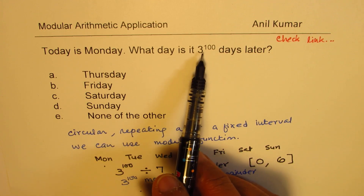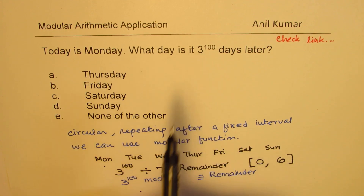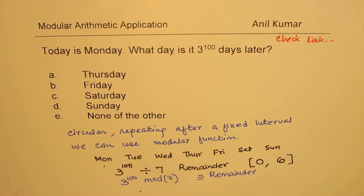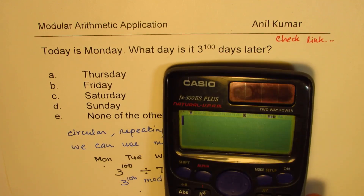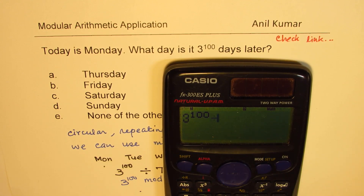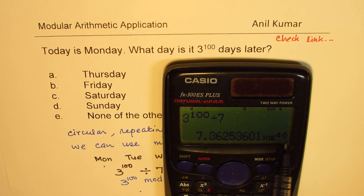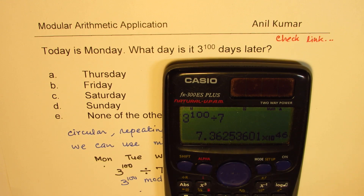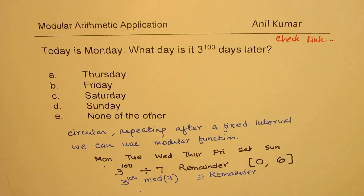Three to the power of hundred is a very big number. If you put it in a calculator, it will definitely give you an error. So you cannot really do three to the power of hundred divided by seven. You get something to the power of 46, but you don't know what the remainder is. So that really doesn't work.